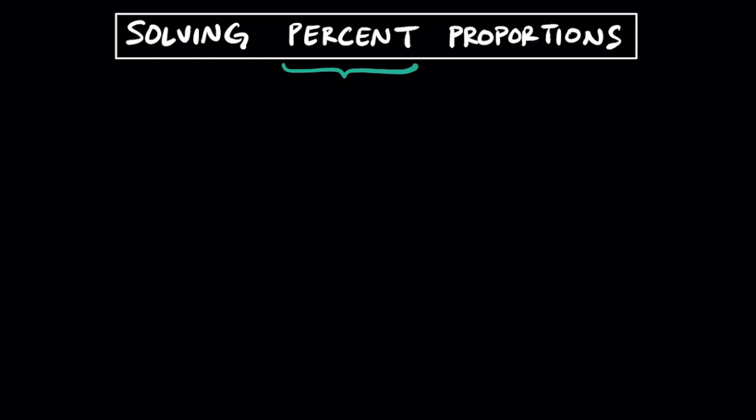Remember, the word percent literally means per 100. An example would be 15%, which is 15 per 100, or 15 hundredths.